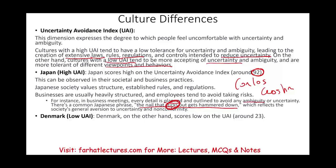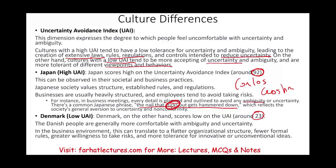On the other hand, a country with low uncertainty avoidance like Denmark — which scores 23 — is generally more comfortable with uncertainty and ambiguity. In a business environment, this translates to flatter organizational structures, fewer formal rules, greater willingness to take risks, and more tolerance for innovative and unconventional ideas. You need to know what type of culture you're dealing with — high uncertainty or low uncertainty.